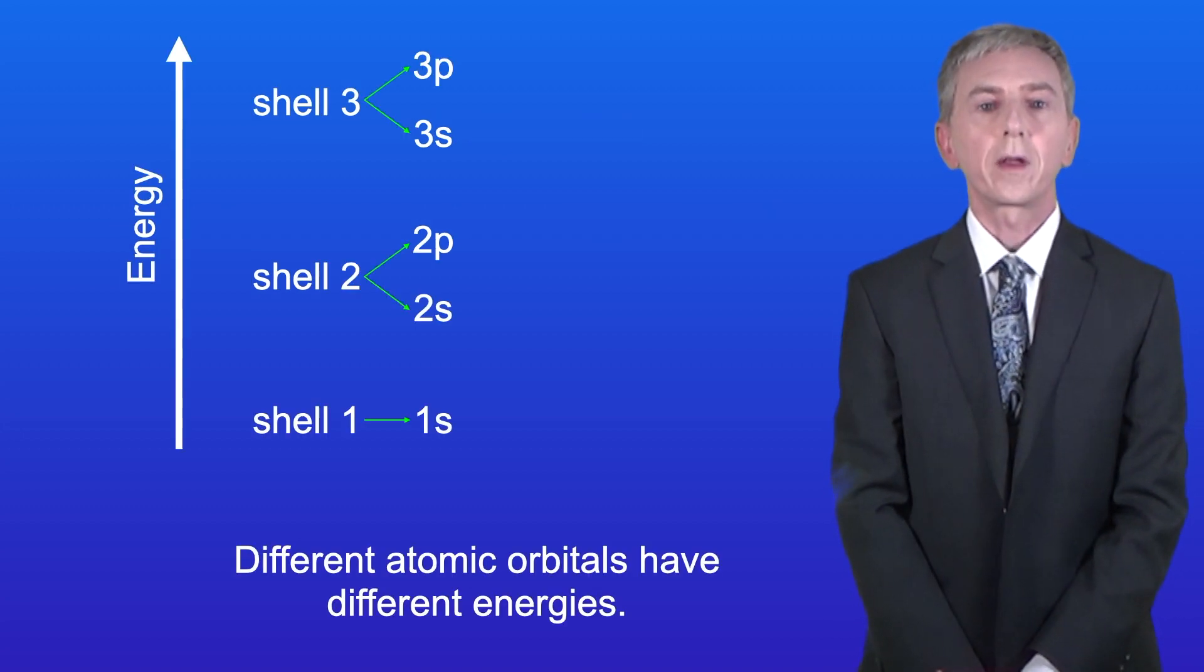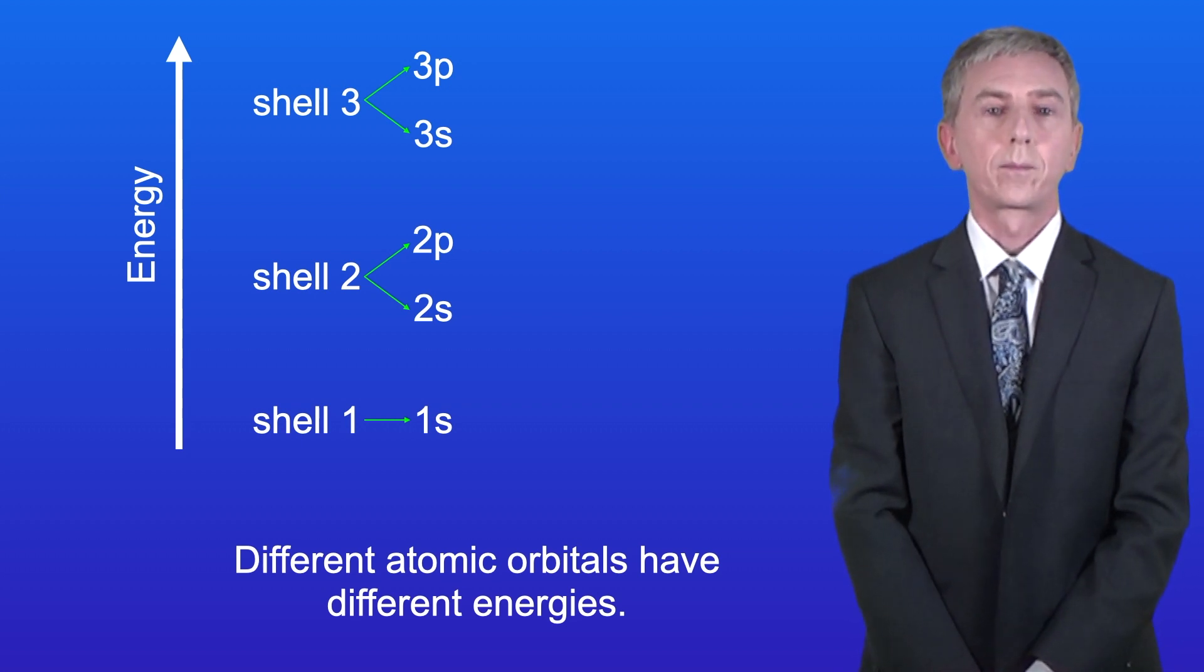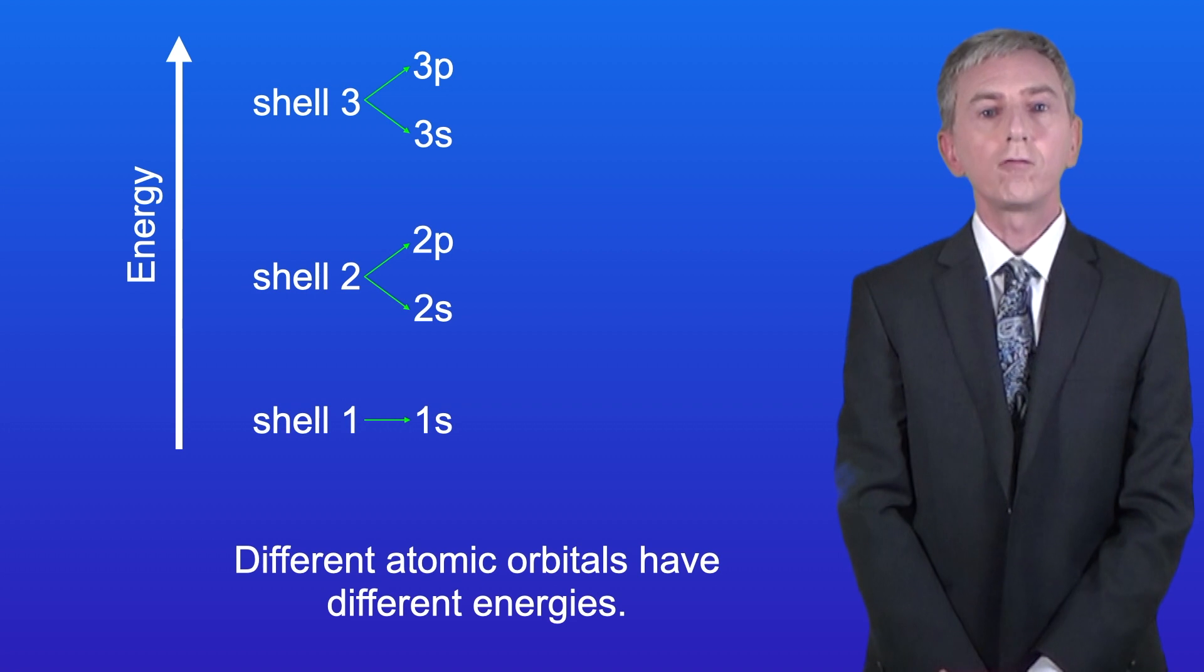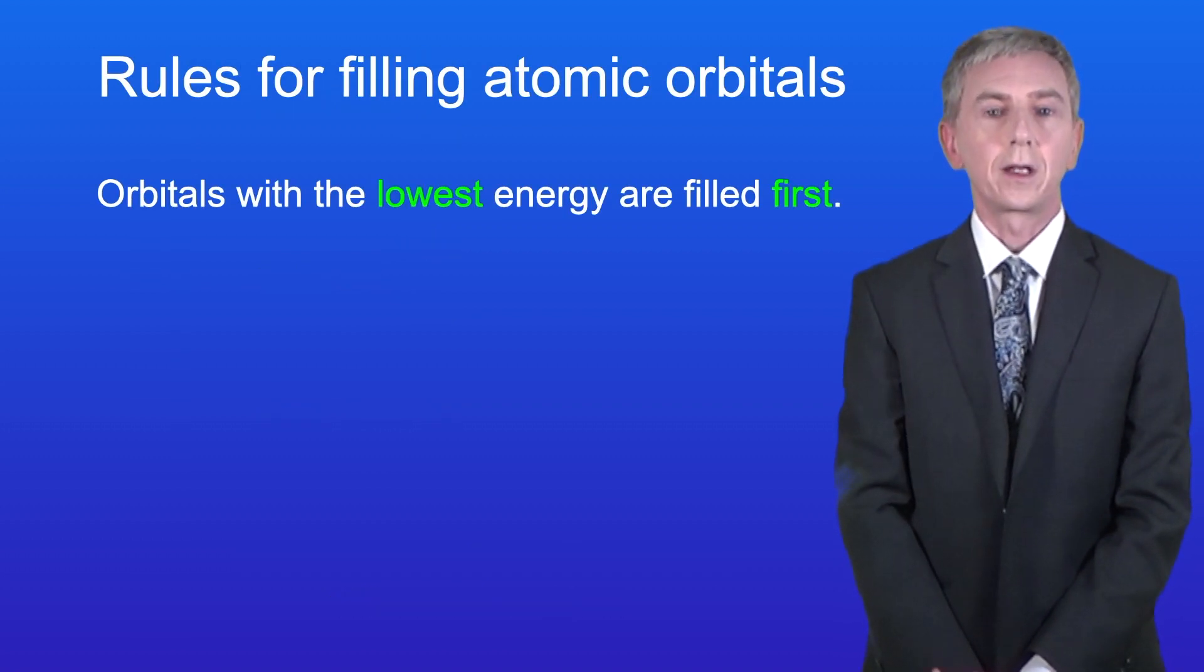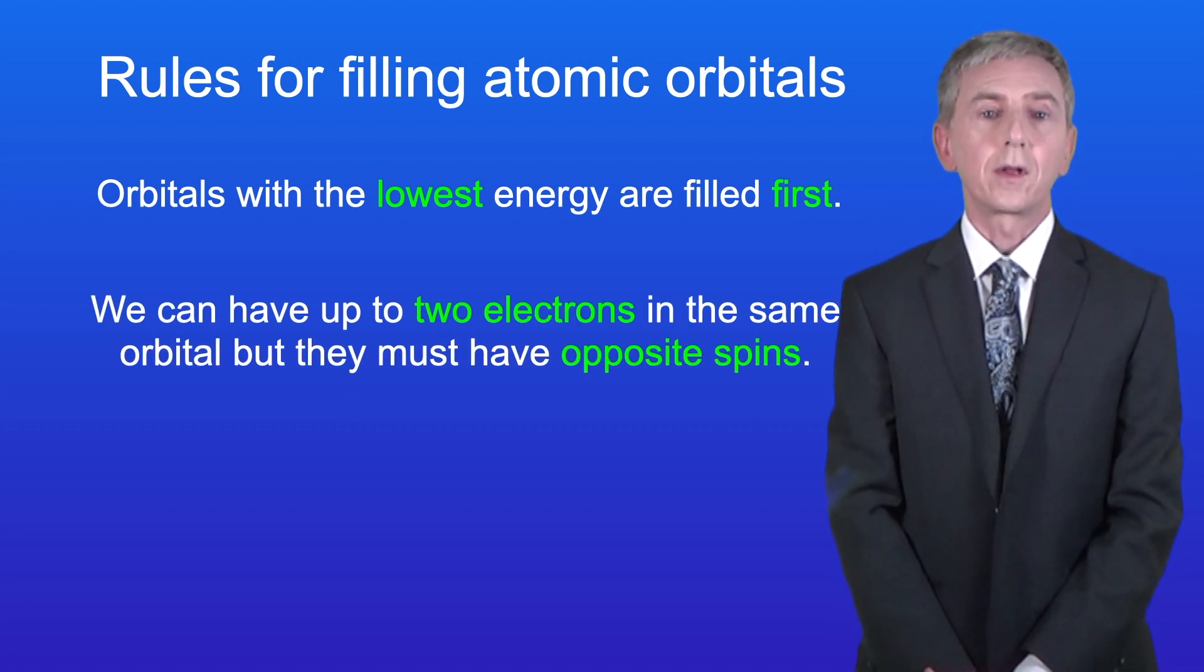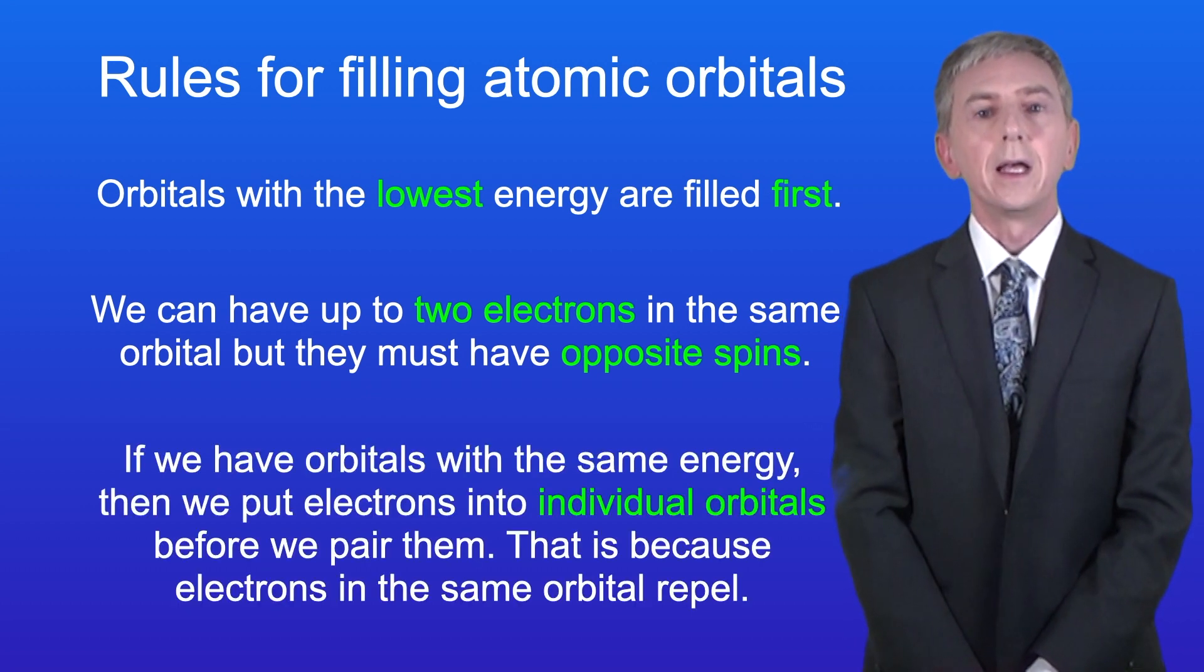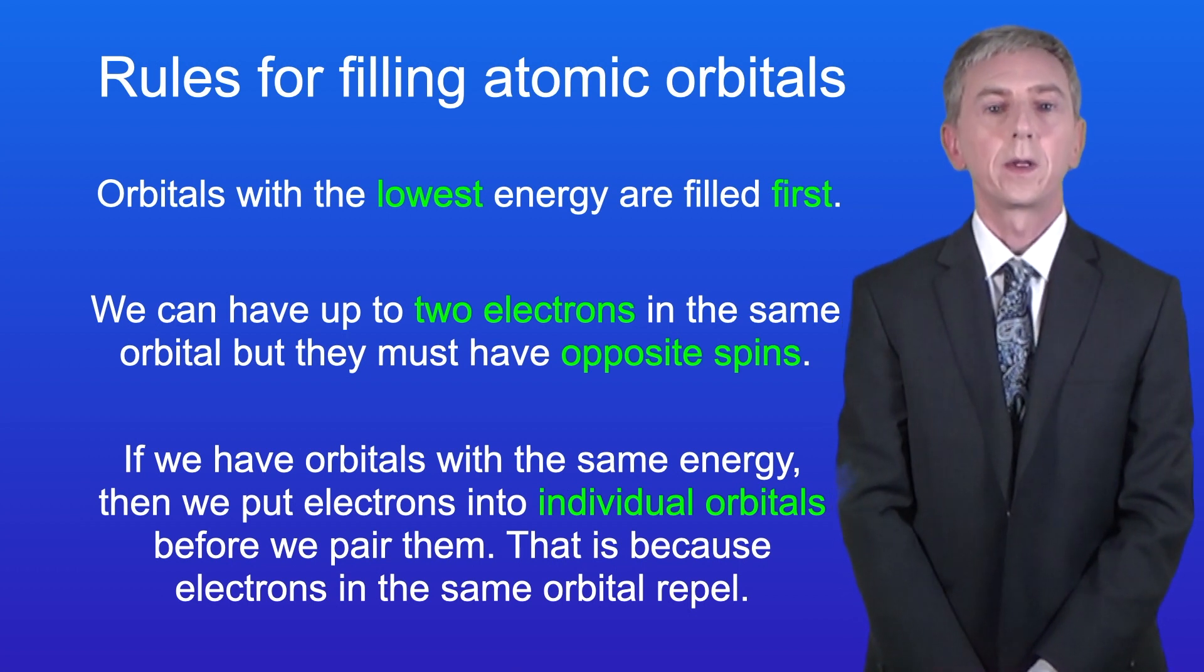In the last video we saw that different atomic orbitals have different energies, and I'm showing you that here. We saw that there are three rules that we use to place electrons into the correct orbitals. Firstly, orbitals with the lowest energy are filled first. Secondly, we can have up to two electrons in the same orbital but they must have opposite spins. And lastly, if we have orbitals with the same energy, then we put electrons into individual orbitals before we pair them. And that's because electrons in the same orbital repel.